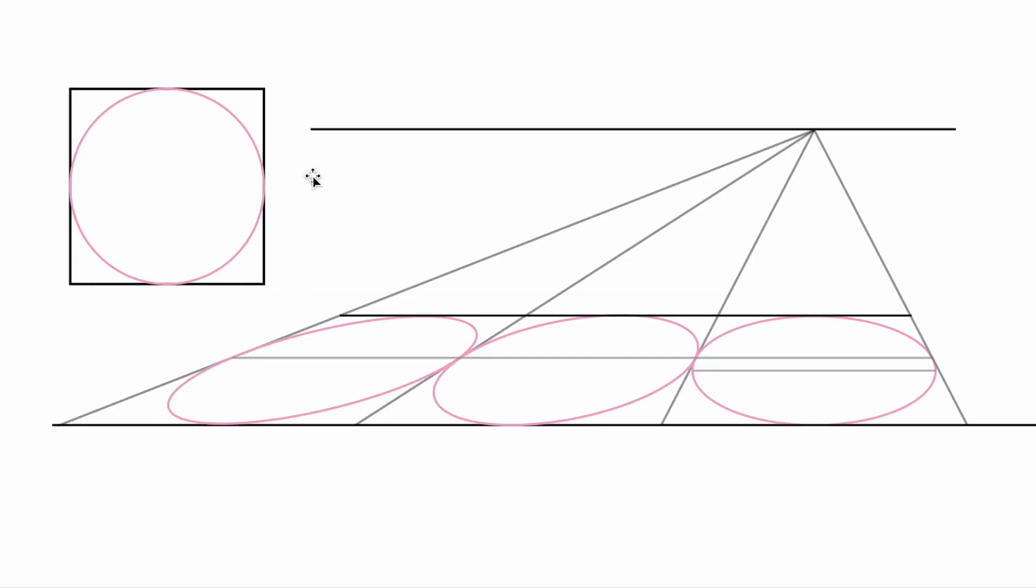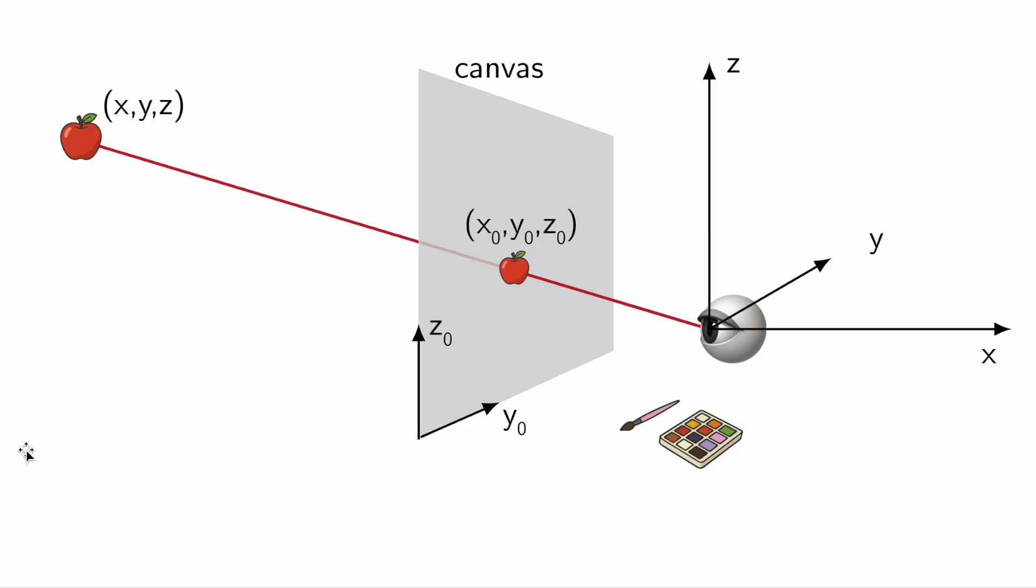Even when we look at the circle a bit from the side, we still get an ellipse, just a rotated one. Let's move on to the proof.